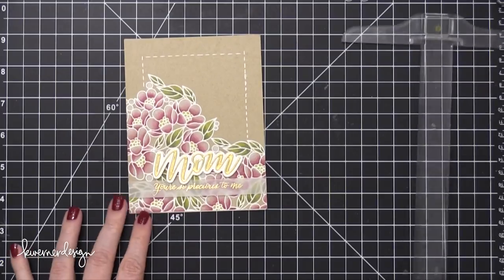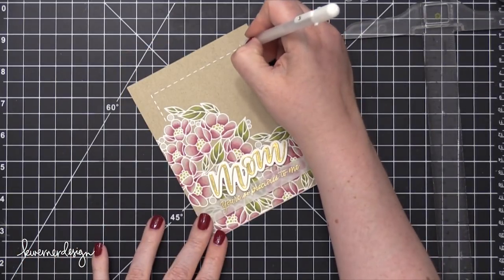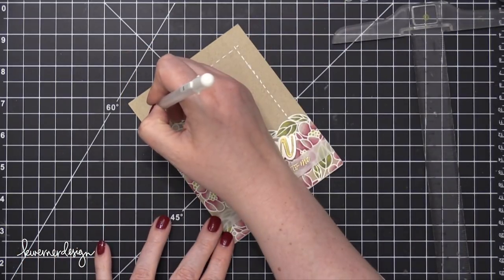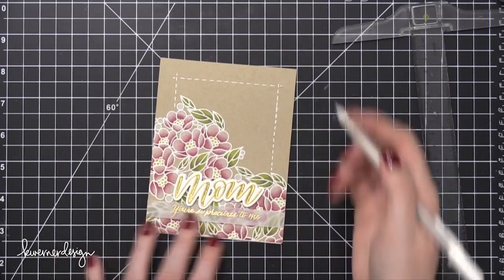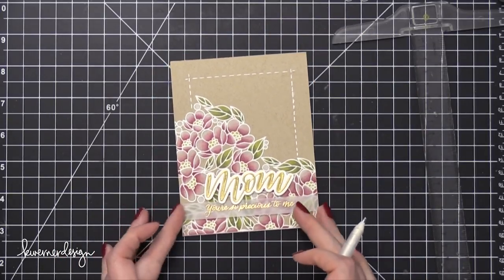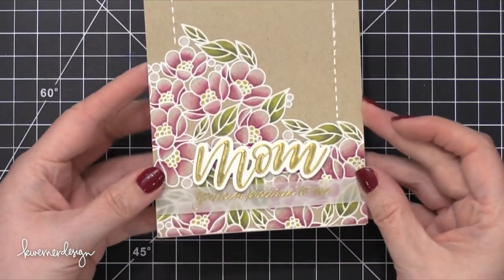Then took a bold Gelly Roll pen. This is the white pen and it's the number 10 and I used a T-square ruler to aid me while I drew on some dash lines just to create a border around the top of that card.